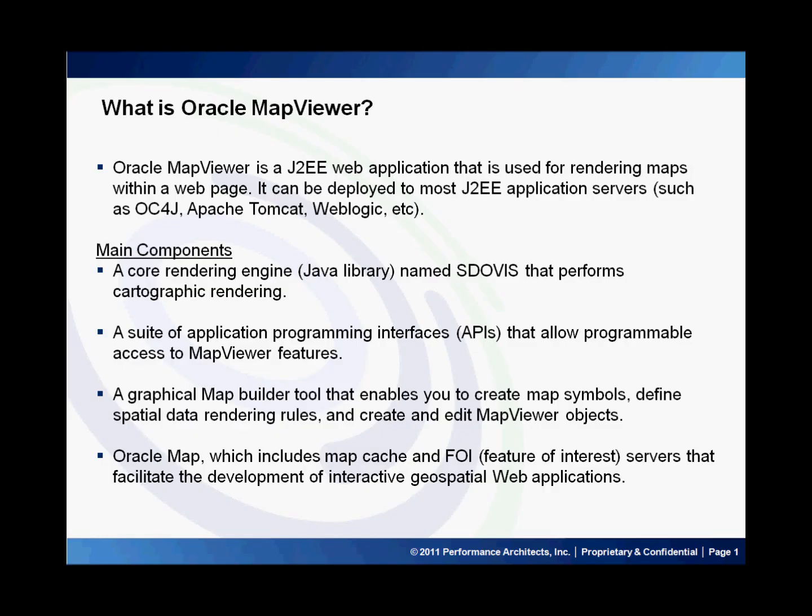For Fusion Middleware, its main deliverable is a J2EE application that can be deployed to a J2EE container such as Oracle Fusion Middleware. It contains mainly four components. Number one, a core rendering engine that performs cartographic rendering, and a suite of APIs that allow programmable access to map features. These APIs include XML, Java, PL/SQL, and an Ajax-based JavaScript API.